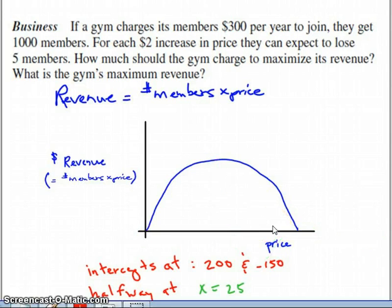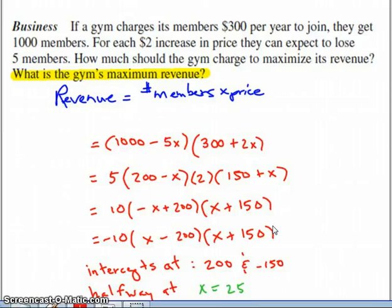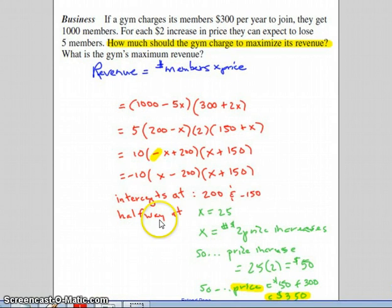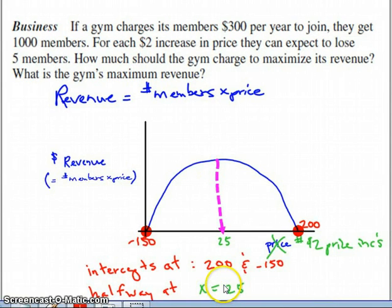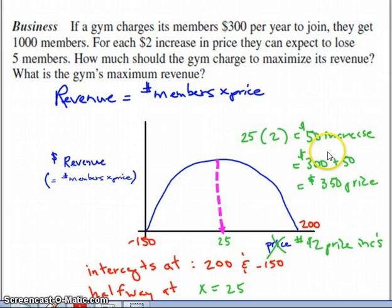More likely though, and I'm just going to go back and show you, more likely you're going to solve the problem this way that we did here. That's probably going to make a whole lot more sense to you if you have a similar word problem. But going back to where we just were, the curve, if you do see it this way, it's still going to work out to be the same thing. It is a halfway point here, from negative 150 to 200, the halfway point is positive 25, and 25 times a $2 price increase means a $50 total price increase, which really does mean a price of $350. So either way, you should end up with the same answer of $350 being the amount that the gym should charge, and if they do that, their maximum revenue is going to be the more than $300,000 amount that I'd said before.